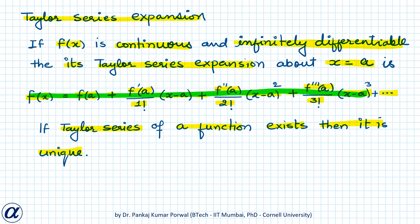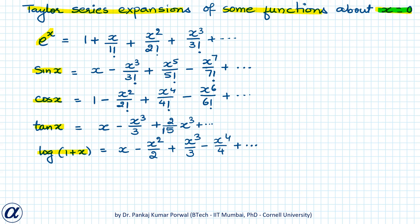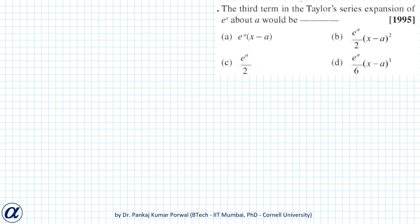Note that Taylor series expansion about x equals a has terms which are either constant or have (x−a) with positive powers — there are no negative powers of (x−a). So if a is 0, there will be either constant terms or powers of x in the Taylor series expansion, as we can see in all the common function expansions.